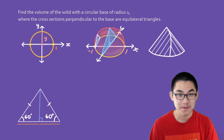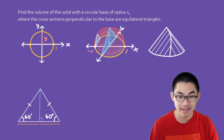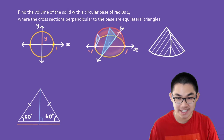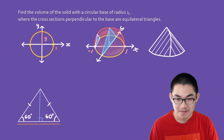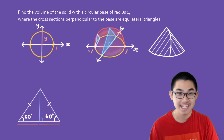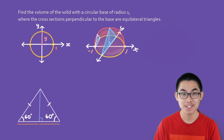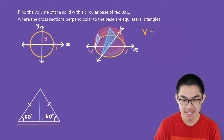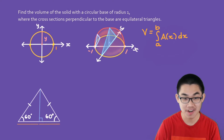So what does this shape look like? It turns out this object has a circular base, and there is a pointy edge running from the top to the bottom — that edge comes from the fact that the top of each triangle has a pointy edge. Now that we know what this object looks like, let's find its volume using the formula: V equals the integral from a to b of A(x) dx, where A(x) is the area of the cross section, which is the triangle.